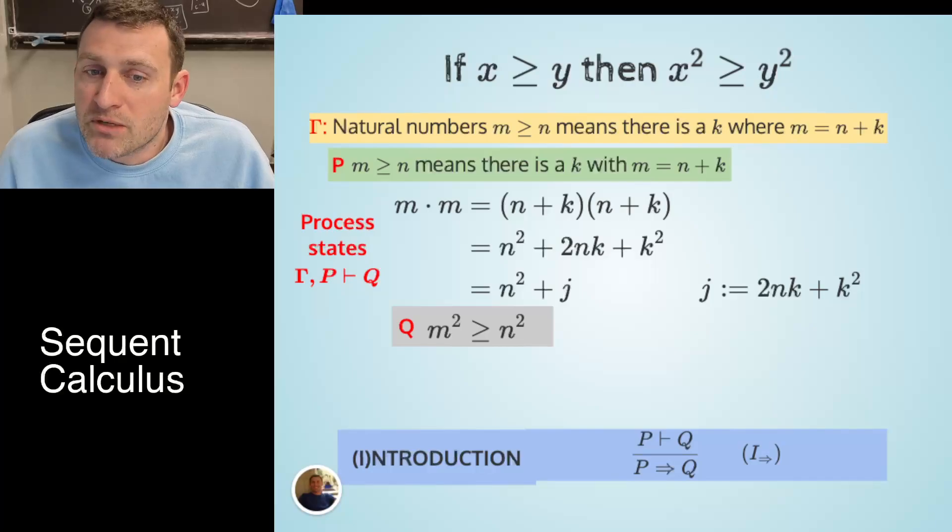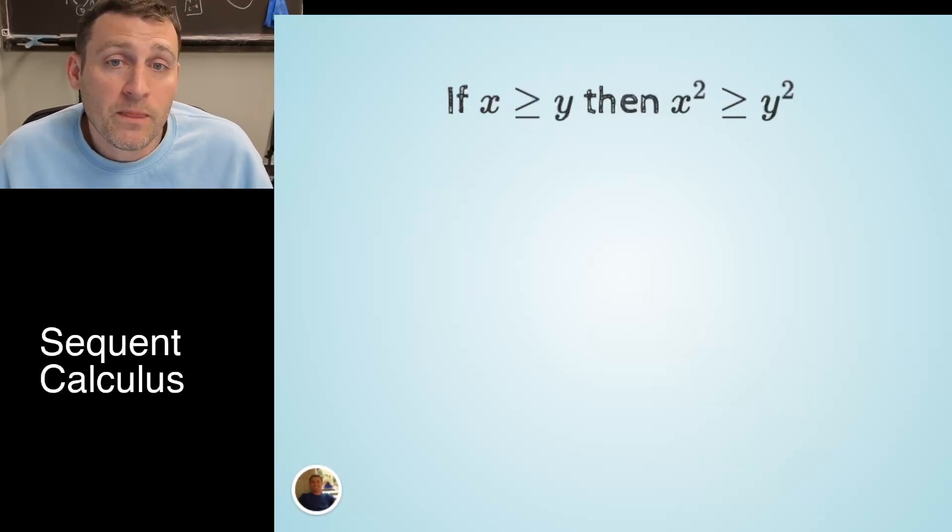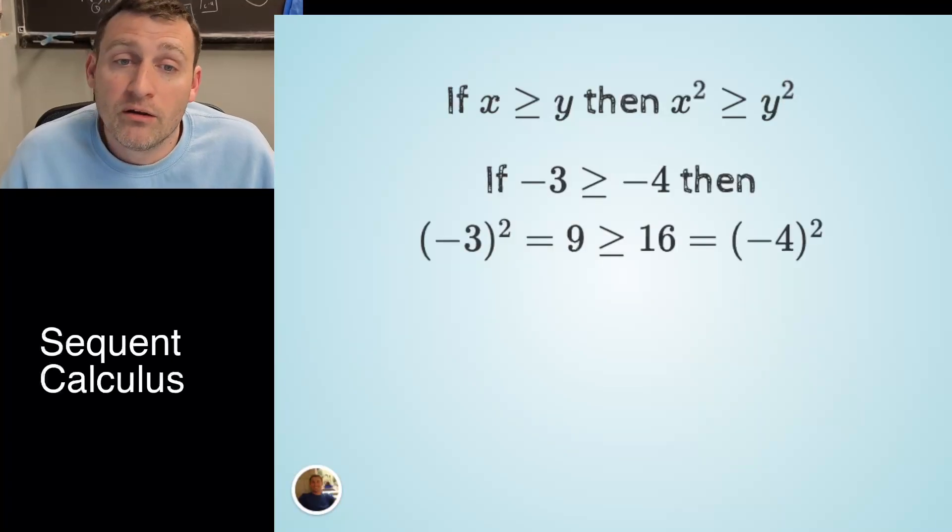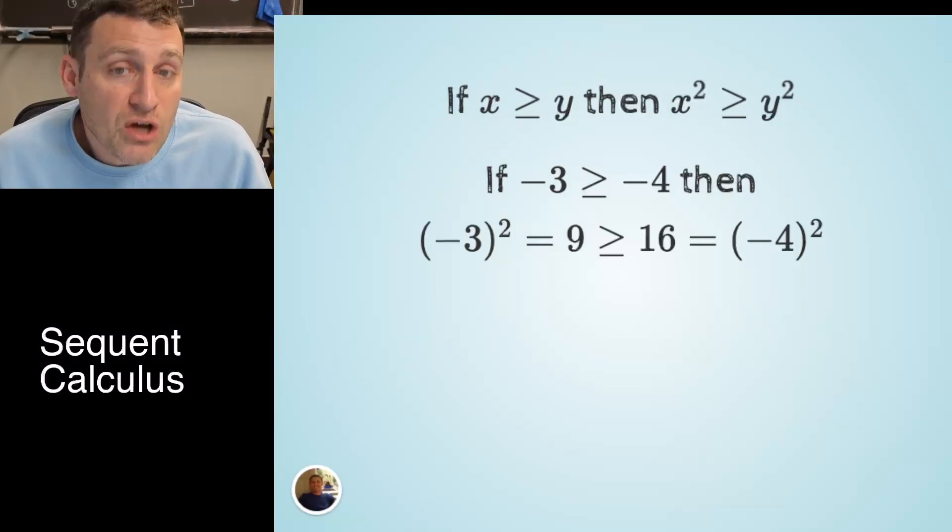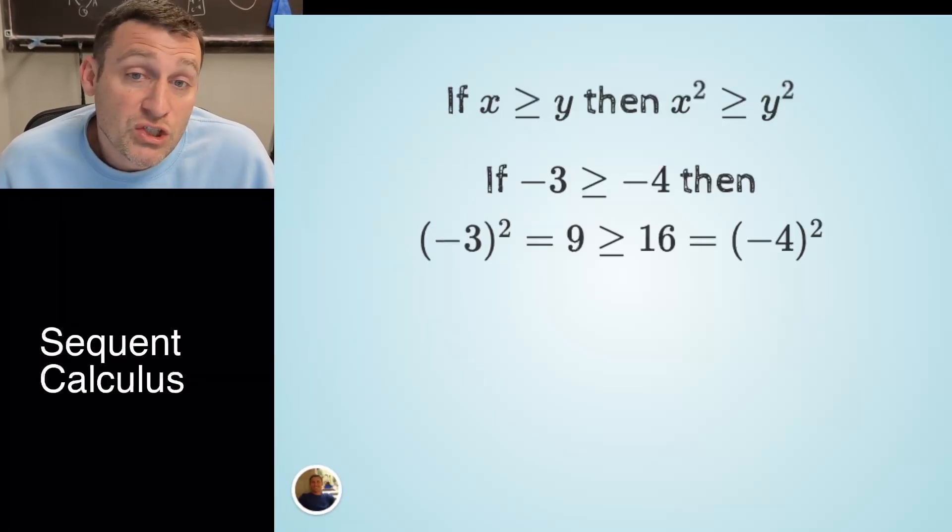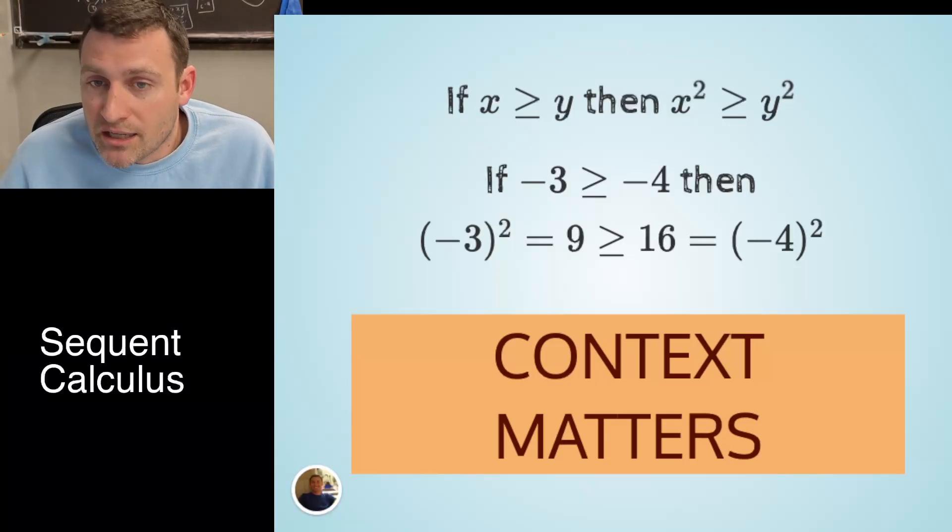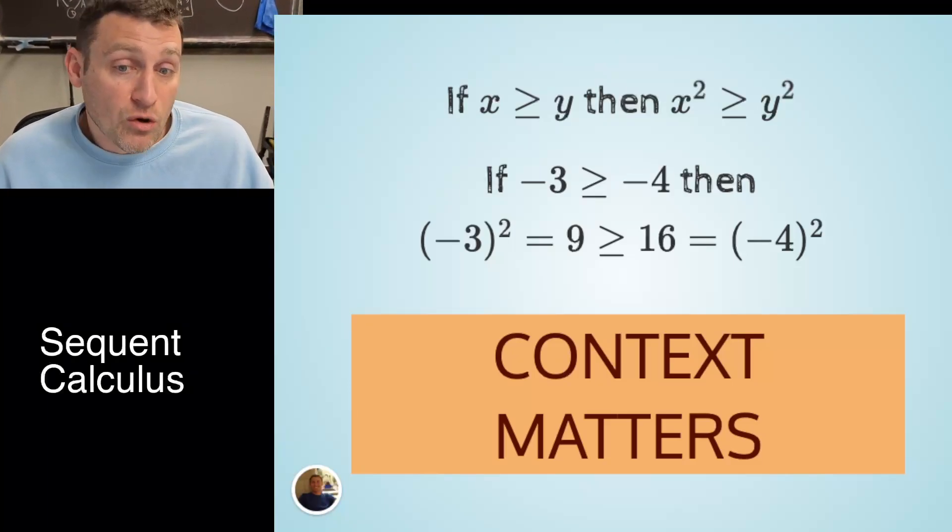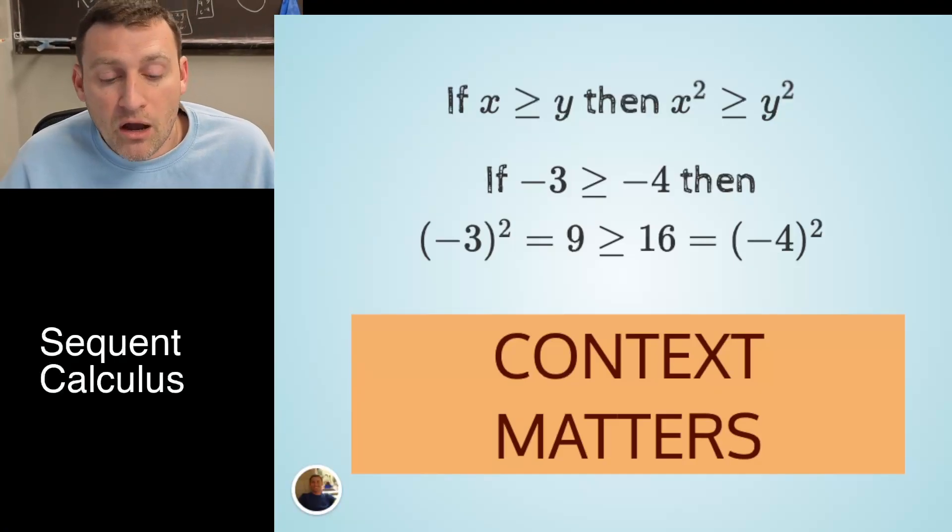But now, can you spot what's missing? If you said context, you're right. We need context to be true. Let's look at this expression one more time. X is greater than or equal to y, then x squared is greater than or equal to y squared. What if we plug in negative 3 and negative 4? Well negative 3 squared is 9, which is not greater than 16, which is negative 4 squared. So what happened here? The answer was we changed the context. Context absolutely matters with implication. The implication we just proved was in the context of natural numbers, counting numbers that are non-negative. We've now changed the context, and the implication no longer seems valid. And without knowing that, we could really gum up what we're trying to say to each other. Context matters.